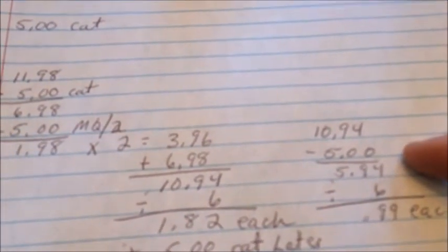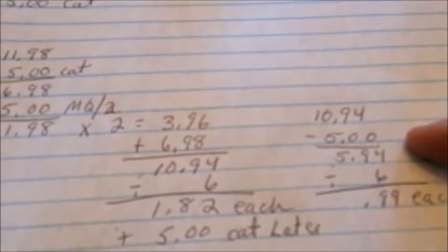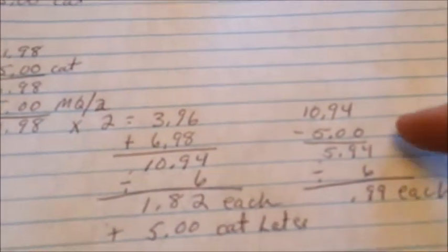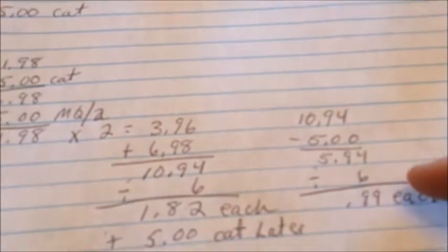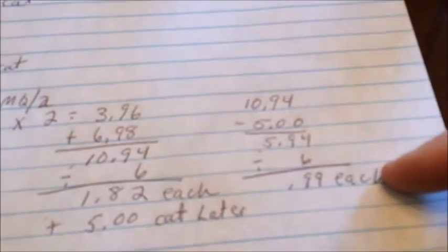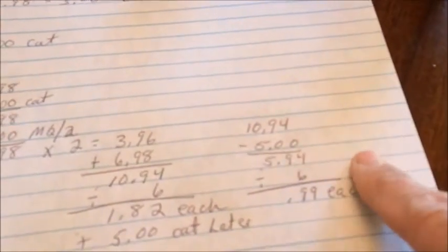They'll minus the $5 Catalina and say well it's kind of like getting the whole thing for $5.94 and divide it by six, and that makes them $0.99 each. And this is just one of my pet peeves on this one, it's not like that.